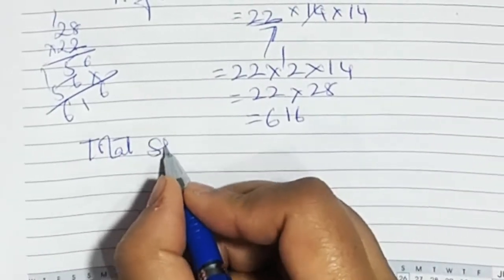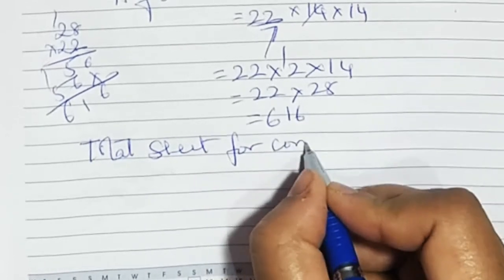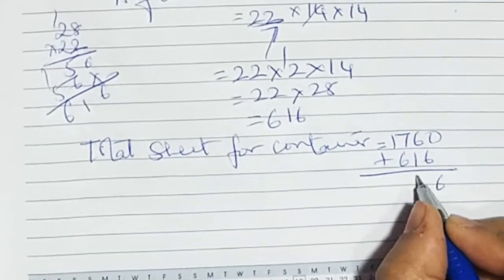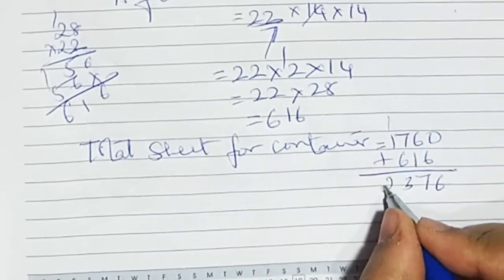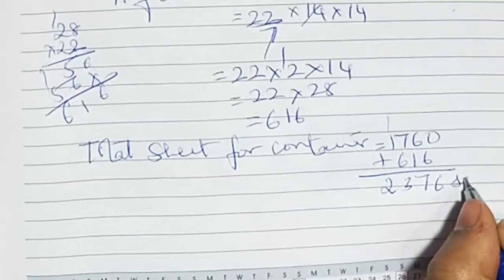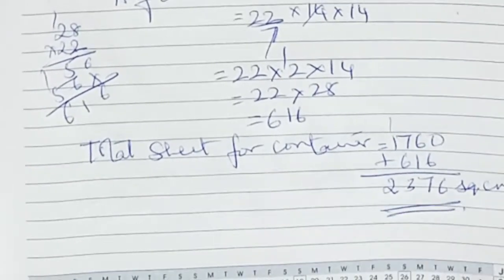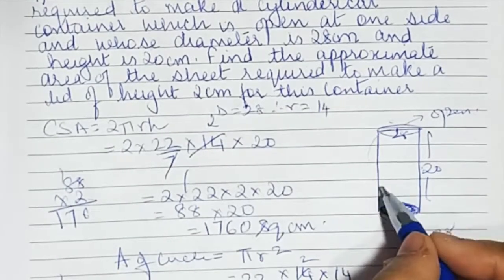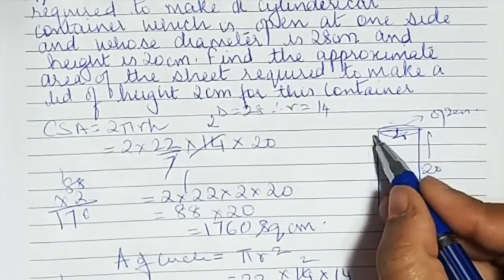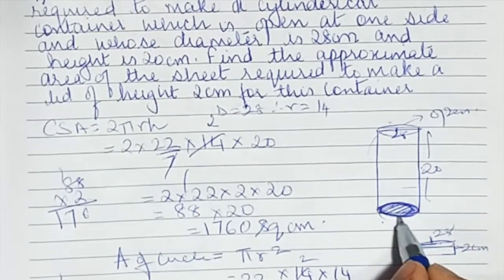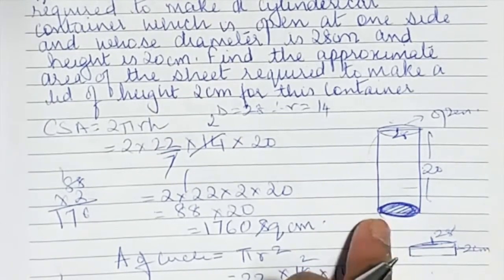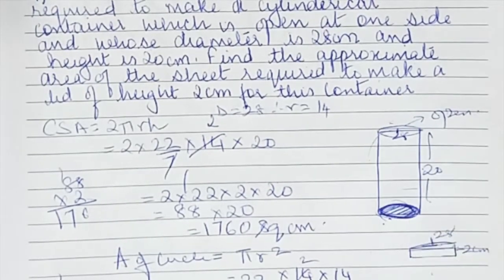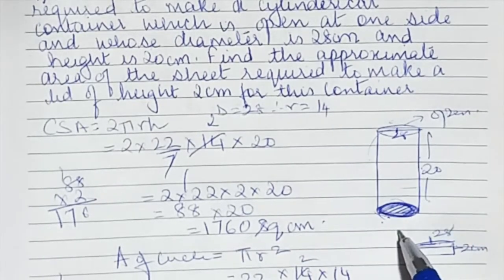Total sheet for container is equal to 1760 plus 616. For the container you require 2376 square centimetres. For the sheet required for the cylindrical container I took curved surface area plus the area of the circle, because it is closed on one side and open on the other. So 1760 plus 616 gives 2376.